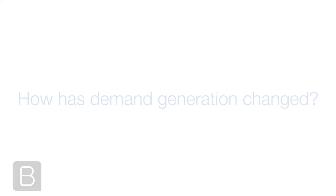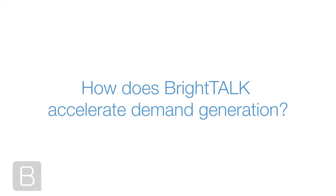Demand generation has changed in that marketers now have the ability to take the user engagement data of who's watching their content and create something relevant out of it. By using marketing automation tools, CRM tools, and lead scoring tools, you have the ability to prioritize the leads coming through your channel and watching your content, so that your sales team can reach out to them when they're most relevant.